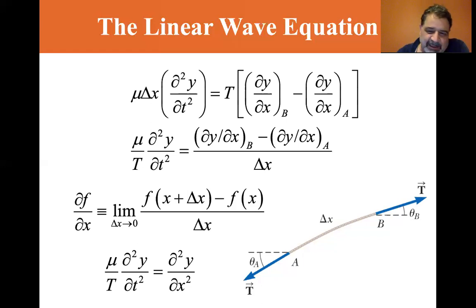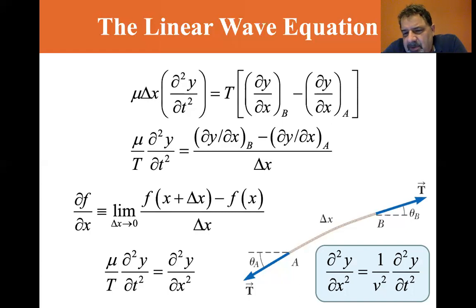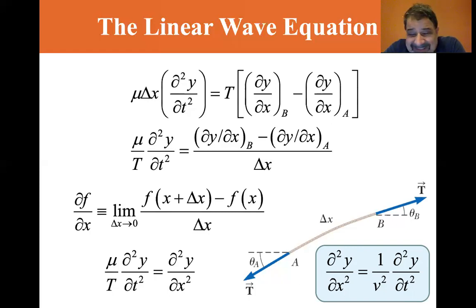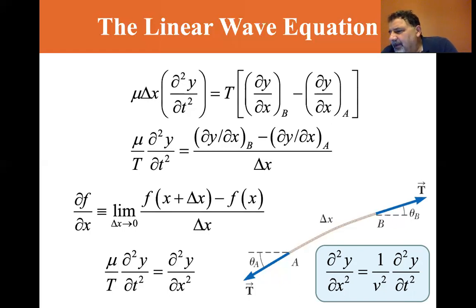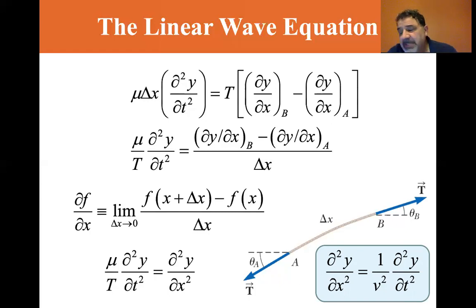This is normally written as: the second partial of y with respect to x equals (1/v²) times the second partial of y with respect to t. That is the linear wave equation, and it applies to waves on a string. In general it applies to various types of traveling waves whose speed is v — on a string, y represents the vertical position of elements of the string.